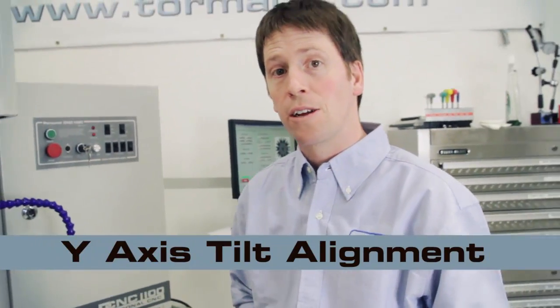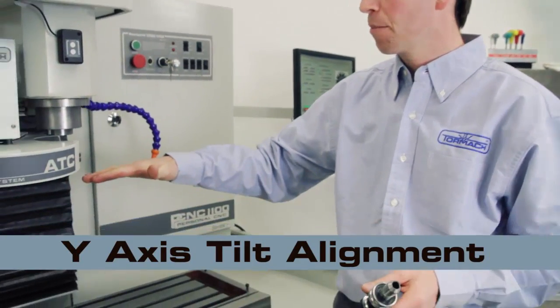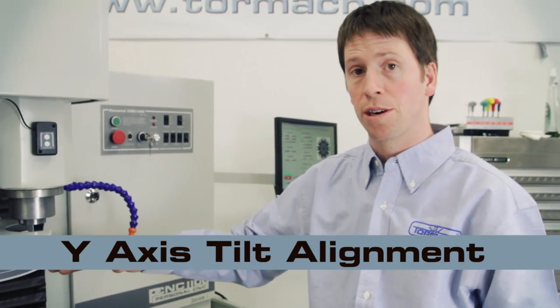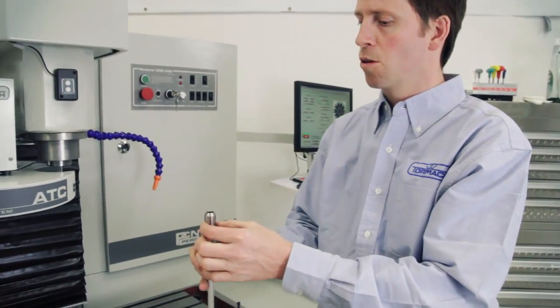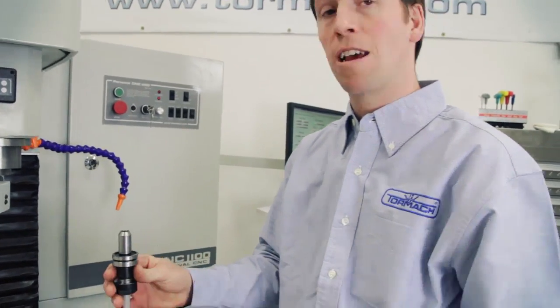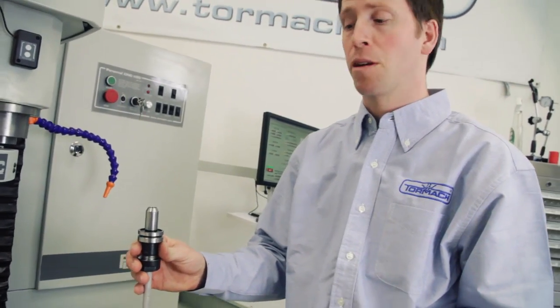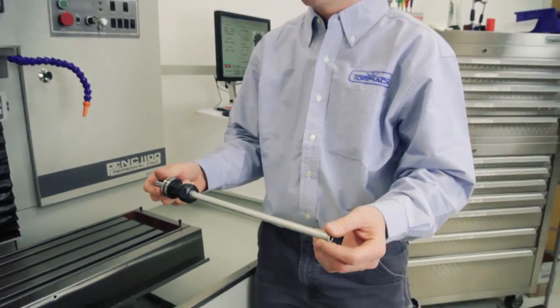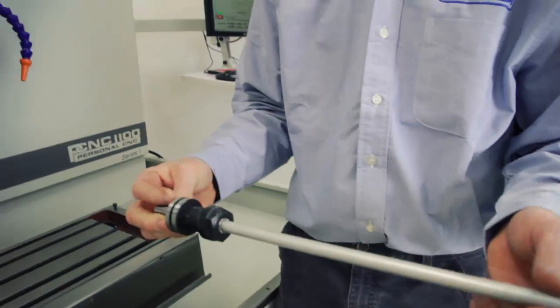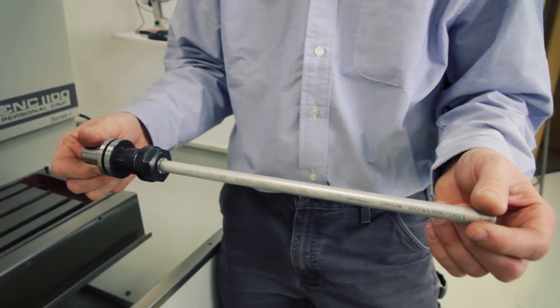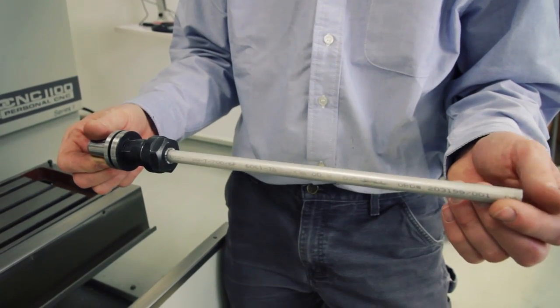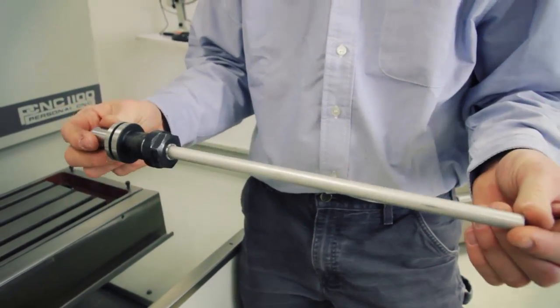Now we're going to take a look at the tilt of the tool changer. What we're looking for here is to make sure that a tool held in the tool changer, that shank of the tool is running along the same axis as the spindle. So what I have here is just an R20 collet tool holder and I've just got a 12 inch piece of tubing stuck in there. Doesn't really matter what diameter tubing you use, you just need something that's a good 12, 14 inches long.